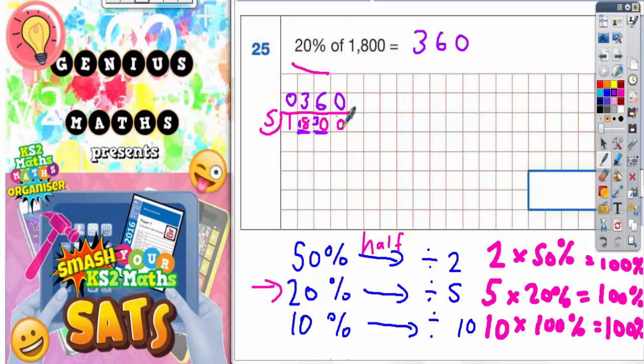However, if you're not so confident with the short division, you could do it a slightly different way. You could start by finding 10%. So 10% of 360.